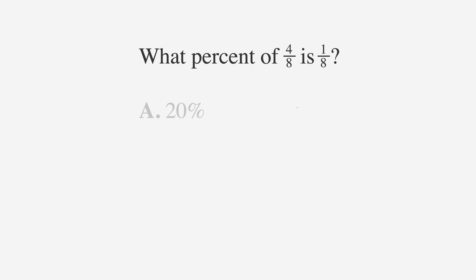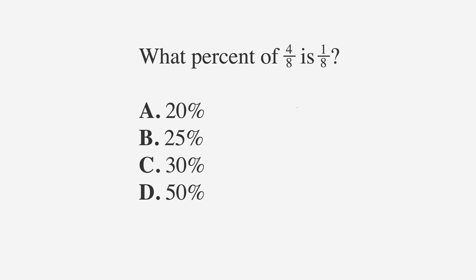The answer choices are A: 20%, B: 25%, C: 30%, D: 50%, and E: 60%. The lines separating chunks of information can naturally be placed after 'what percent' and 'of 4 eighths.' This helps draw your eye to pieces of information that go together.